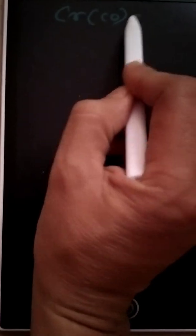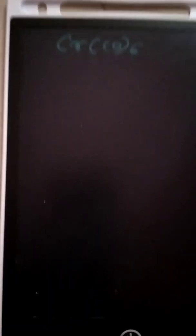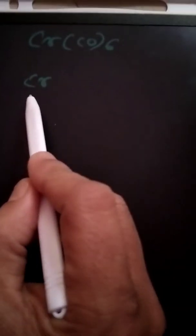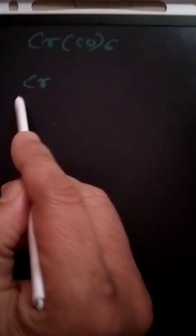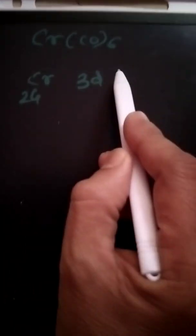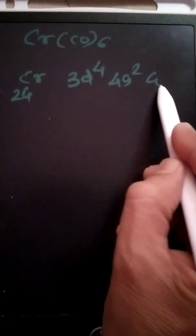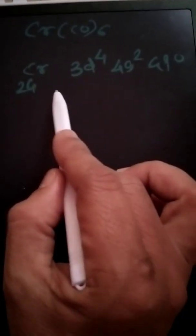So here, chromium has atomic number 24. It has valence configuration 3d4 4s2 4p0. So here the ground state is like this.